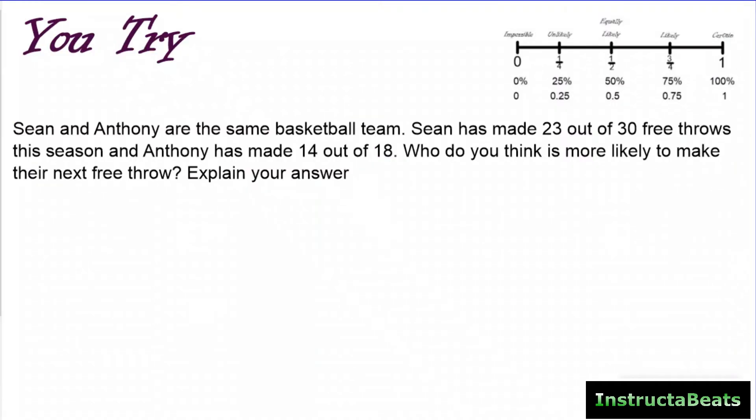Let's try a You try problem. So our You try problem says Sean and Anthony are on the same basketball team. Sean has made 23 out of 30 free throws this season, and Anthony has made 14 out of 18. Who do you think is more likely to make their next free throw? Explain your answer. And I want you to explain your answer using our probability number line here, using these descriptive words. So in other words, what it's asking you is, who's closer to 100% or 1 when you do their probability that they will make the next free throw? Go ahead and pause it, try it out, and then you can check your understanding with me. If you aren't ready for that yet, you can just do this as another we-do problem. So hopefully just pause it and at least try it.